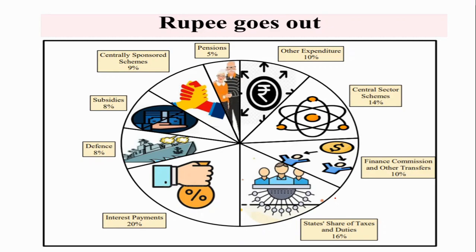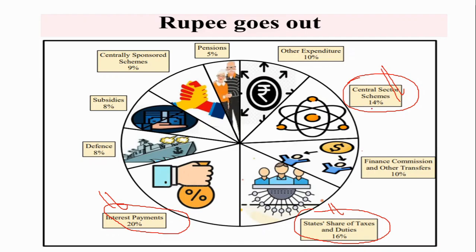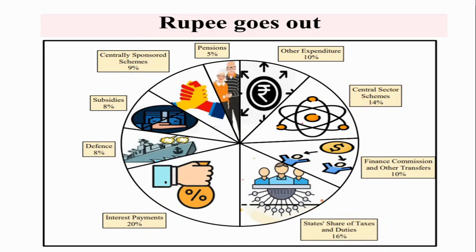Now where does the government spend its money? The highest expenditure is on interest payments for previous debt. Second, states' share in taxes and duties through devolution. Third, central sector schemes at 14%. Then centrally sponsored schemes and finance commission transfers. Defense accounts for 8%, subsidies 8%, and pension 5%.